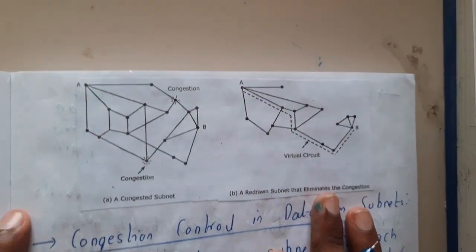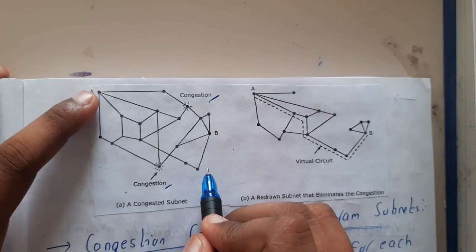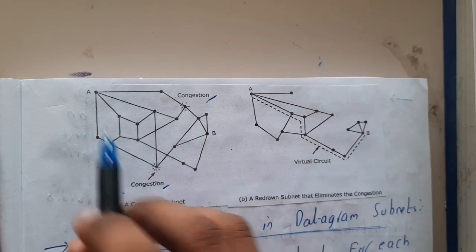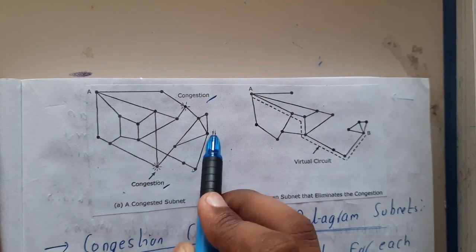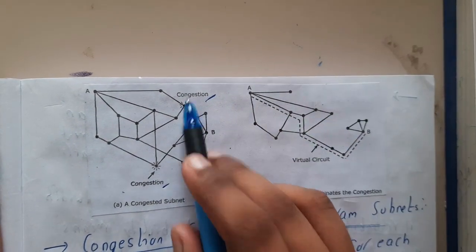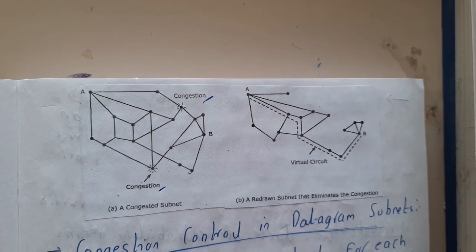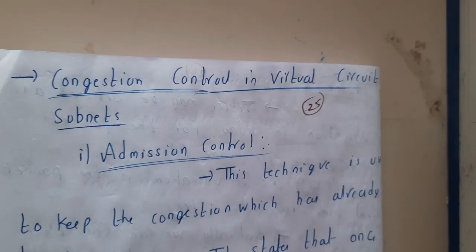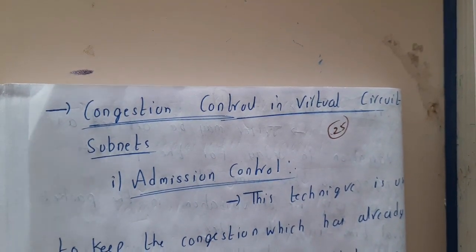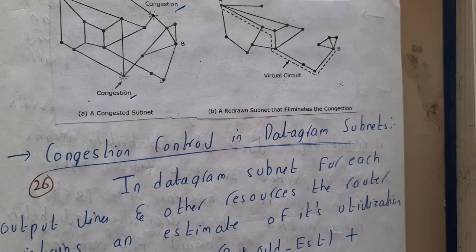For example, here we have two positions of congestion. If you observe carefully, from A to B there is one more path available. There is congestion on one route, but we are able to reach our destination through some other path. So you need to search for these kinds of paths. I hope everyone got some basic idea. In the next lecture, we will be going through congestion control in datagram subnets. Thank you for watching.